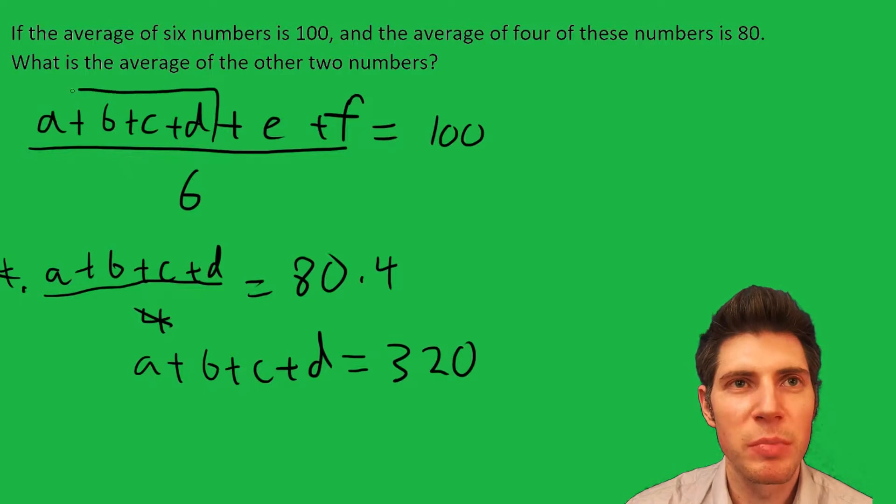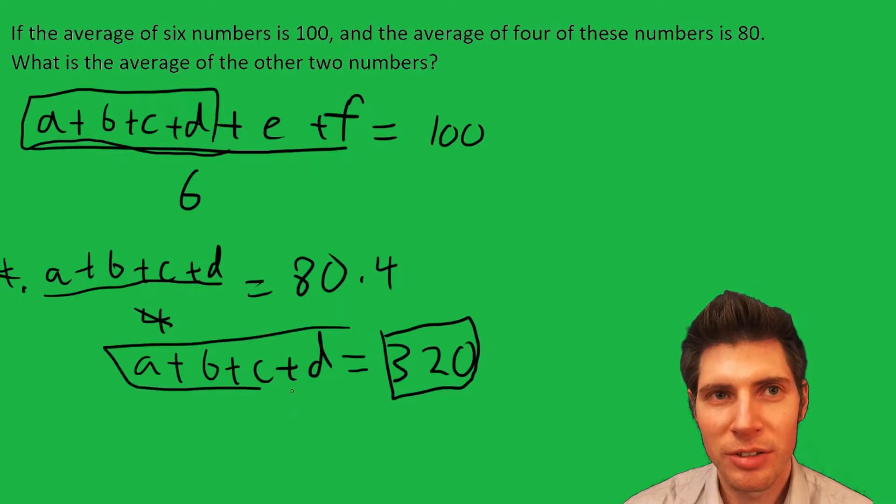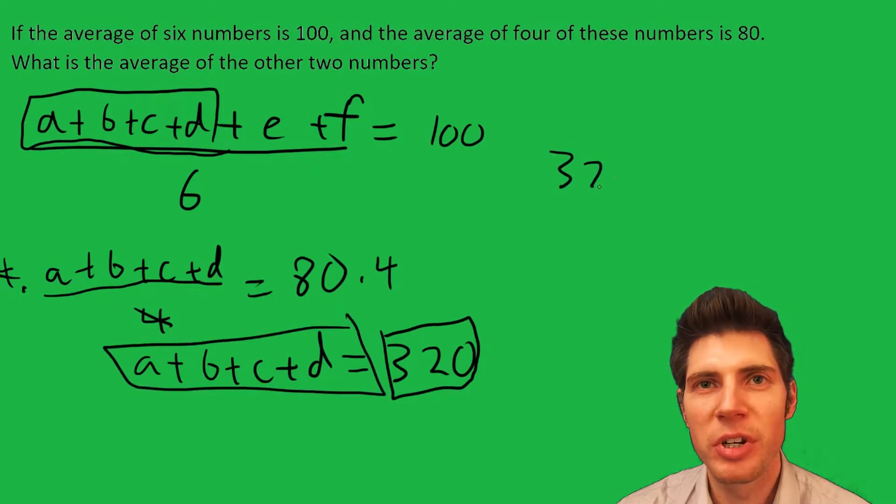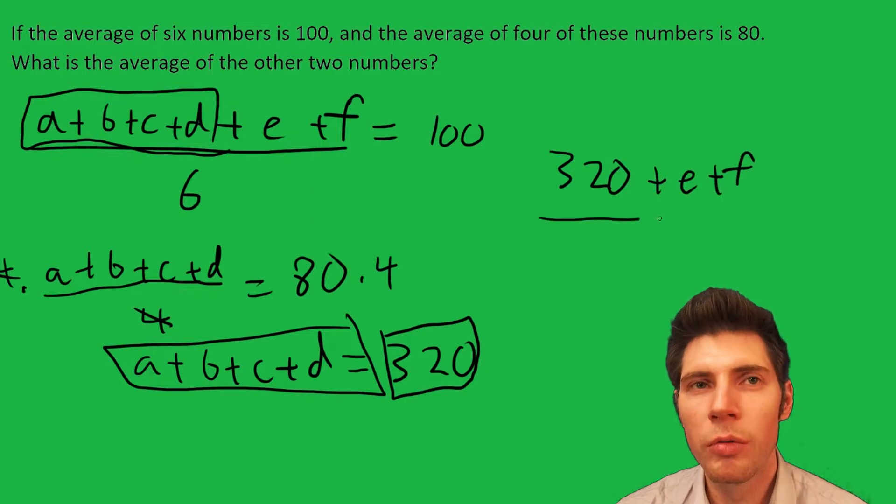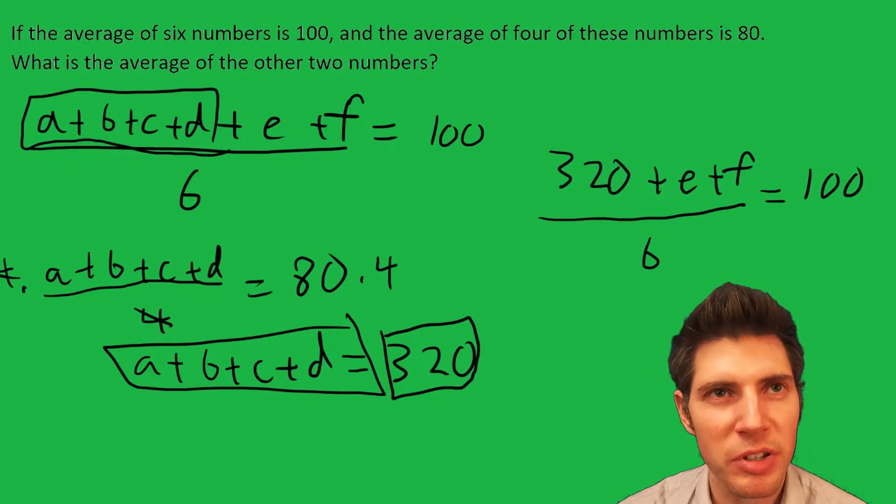Now notice I have an a+b+c+d right here. Well, I'm going to plug in 320 for that. So I end up with (320+e+f)/6 = 100. So all I did was plug in 320 for the a+b+c+d.